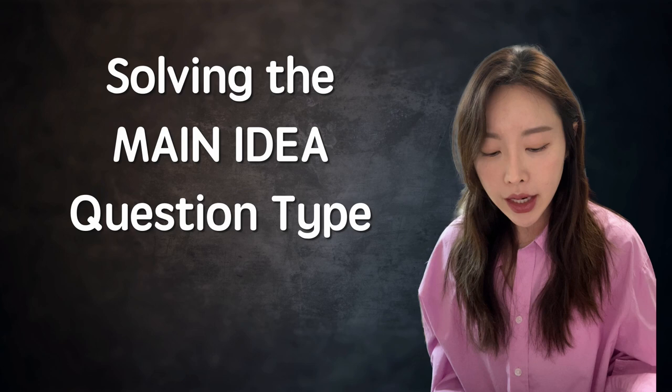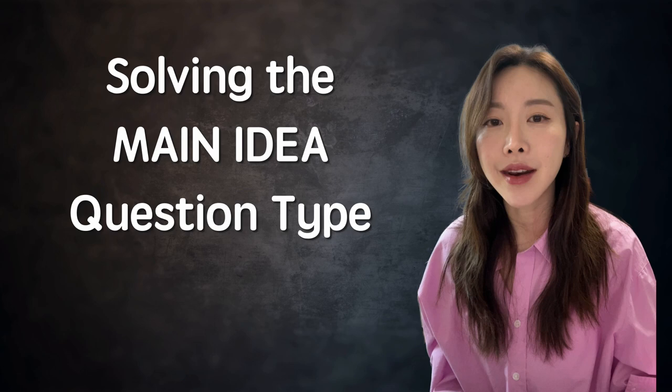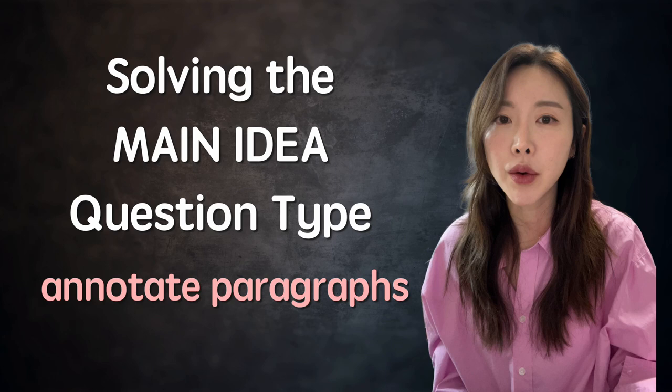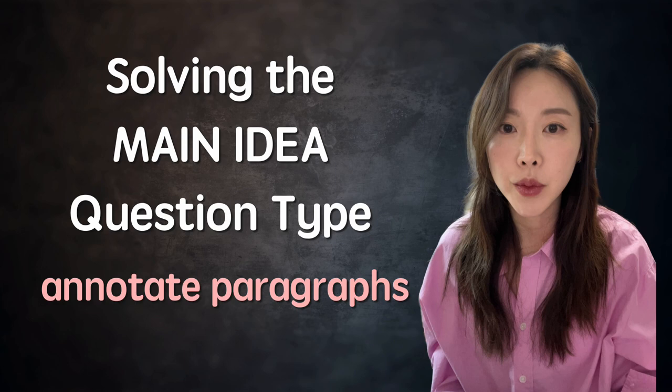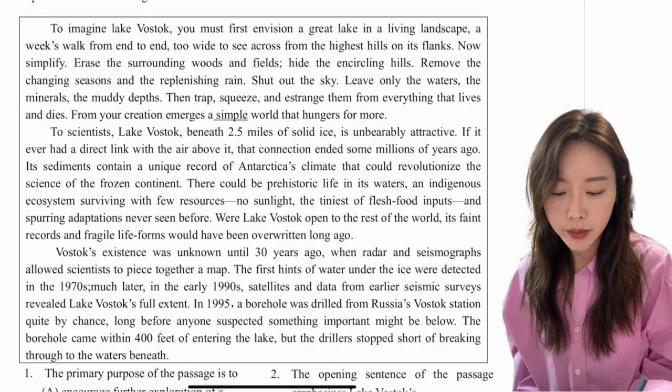Now let's look at the most common question type: the main idea question. When doing main idea questions, it's very helpful to annotate each paragraph — briefly write what each paragraph was about, or underline key parts. Whichever method is more convenient for you.